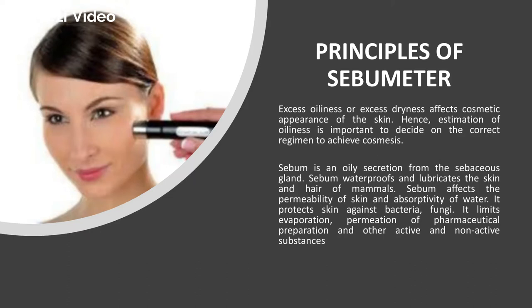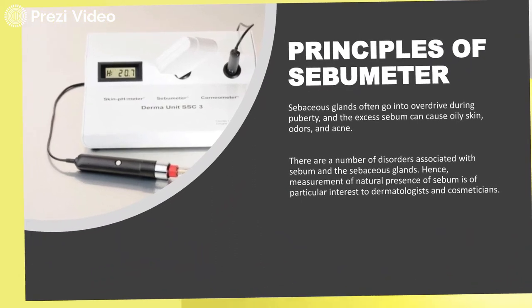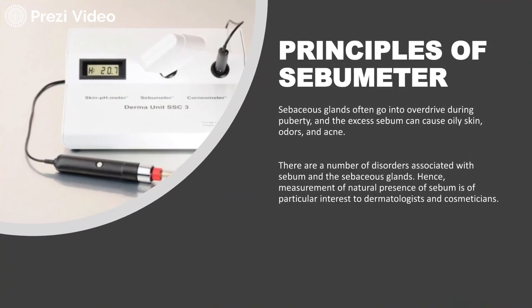Estimation of oiliness is important to decide on the correct regimen. Sebum is an oily secretion from the sebaceous glands that waterproofs and lubricates the skin and hair of mammals. Sebum also affects the permeability of the skin and the absorptivity of water, protects the skin from harmful bacteria and fungi, and limits the evaporation and permeation of pharmaceutical preparations and other active and non-active substances. There are a number of disorders associated with sebum and sebaceous glands, making measurement of natural sebum presence of great interest to dermatologists and cosmeticians.